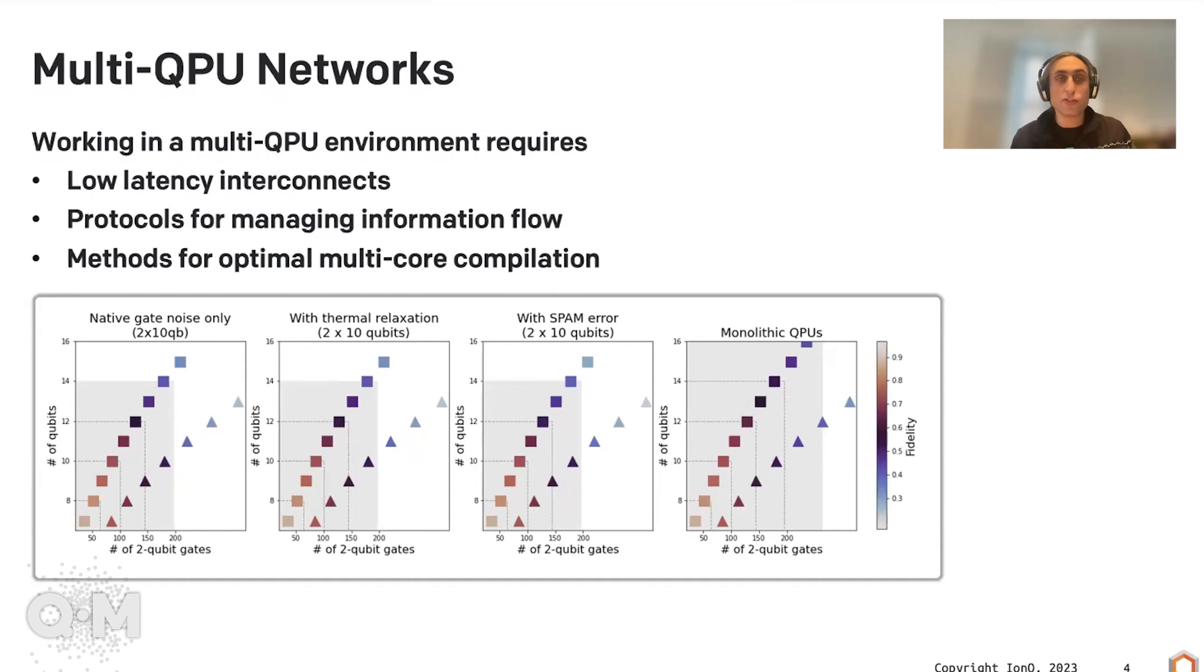None of these things exist out of the box. Even for classical computers, you have to use very specific protocols. If you try to run a supercomputer through the internet, it wouldn't be nearly as fast as you want it to be. You need things to be close together. You need things to work extremely fast. And so we're working on all of these different components in order to start scaling up using an optical network.